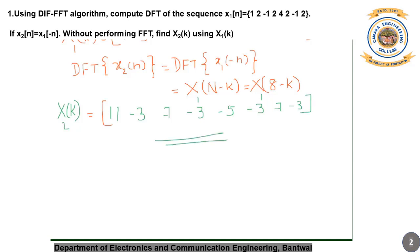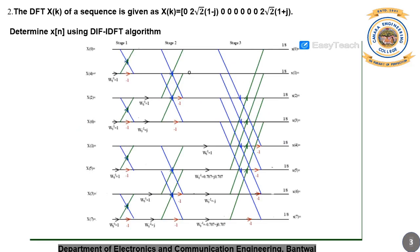Let us begin with the second problem of tutorial number 7. Given X(k), the DFT values of x(n), we need to find x(n) using the DIF-IDFT algorithm, implemented using a butterfly diagram. The given values are: X(0)=0, X(4)=0, X(2)=0, X(6)=0, X(1)=2√2(1 minus j), X(5)=0, X(3)=0, and X(7)=2√2(1 plus j).